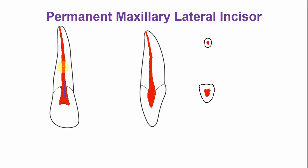The size of the canal is also reduced. Locating the canal in older patients becomes difficult because of the reduction in size of the pulp chamber. In a labio-lingual direction, the canal becomes very thin. In the cervical section, it becomes more oval in shape due to the deposition of dentine within the root canal.